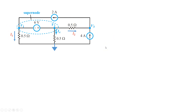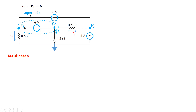The first thing I want to do is at the super node, write down the expression directly. Because V2 is on the plus side, V1 is on the minus side, and the overall polarity is 6 volts, this basically means V2 is 6 volts higher than V1. In other words, V2 minus V1 equals 6 volts.